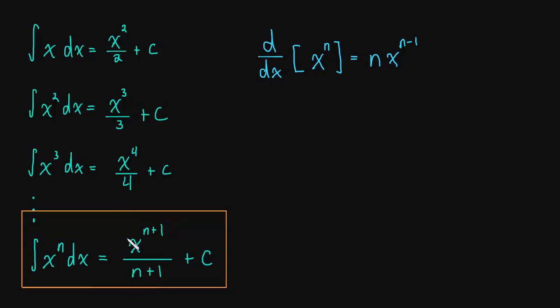So that's where this antiderivative power rule comes from. We're really just undoing the derivative power rule. Here we subtracted 1 from the exponent and multiplied. Here we're adding 1 to the exponent and dividing.